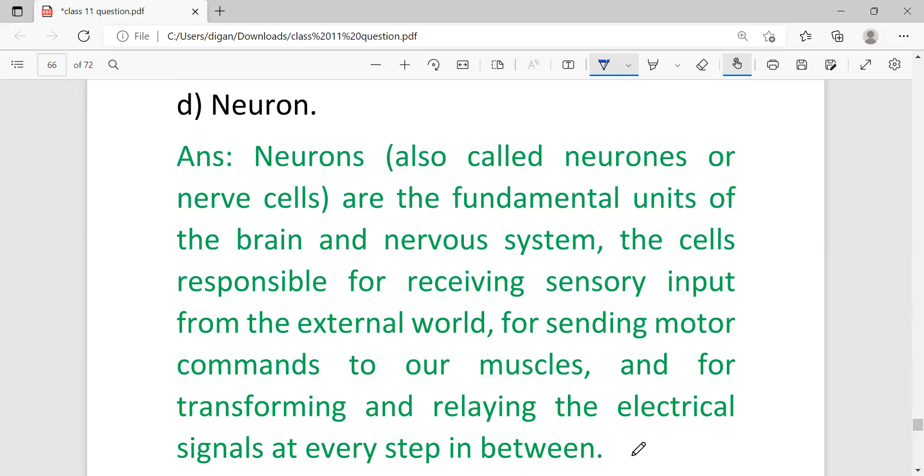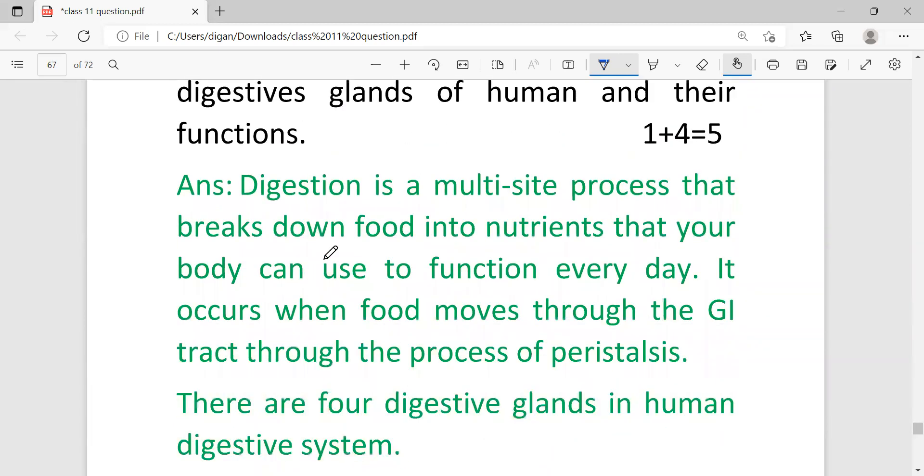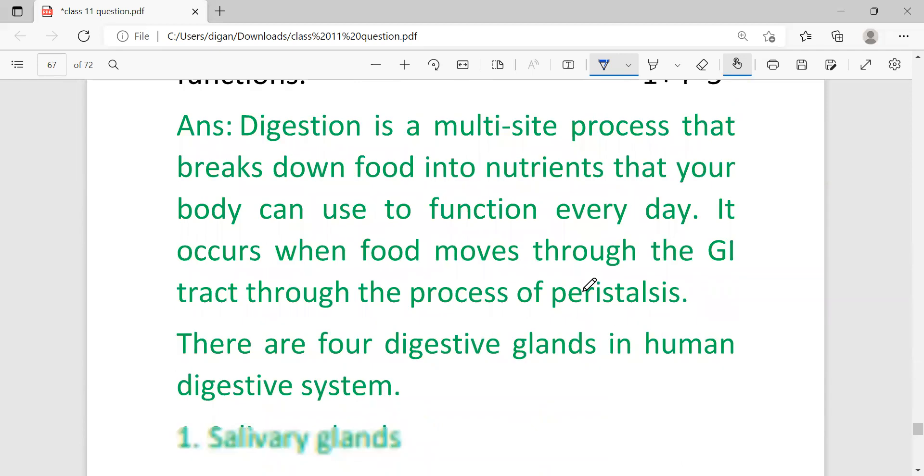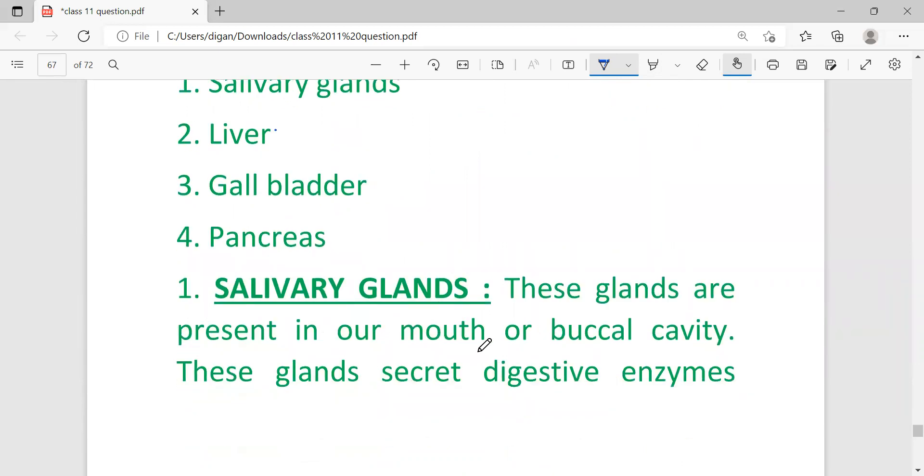What is digestion? Describe the various digestive glands of human and their function. Digestion is a multi-site process that breaks down food into nutrients that your body can use to function every day. There are four digestive glands in human digestive system: salivary gland, liver, gallbladder, and pancreas.